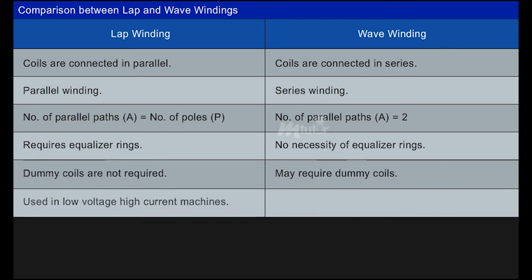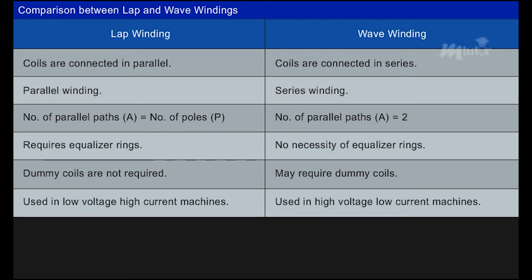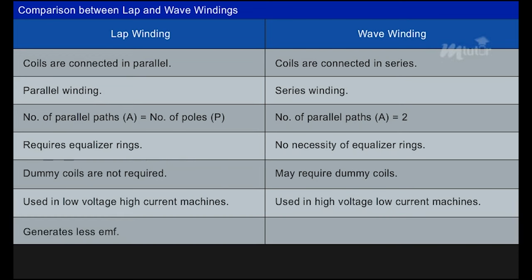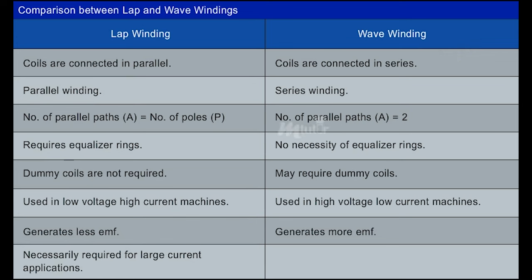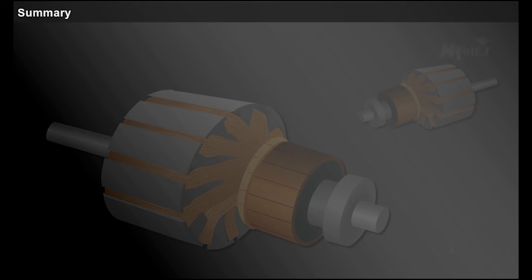Low voltage and high current machines use lap windings, but wave windings are used in high voltage and low current machines. Lap winding generates less EMF compared to wave winding. Due to more parallel paths, lap windings can be used for large current applications, whereas wave winding is not suitable for such applications as it has only two parallel paths.